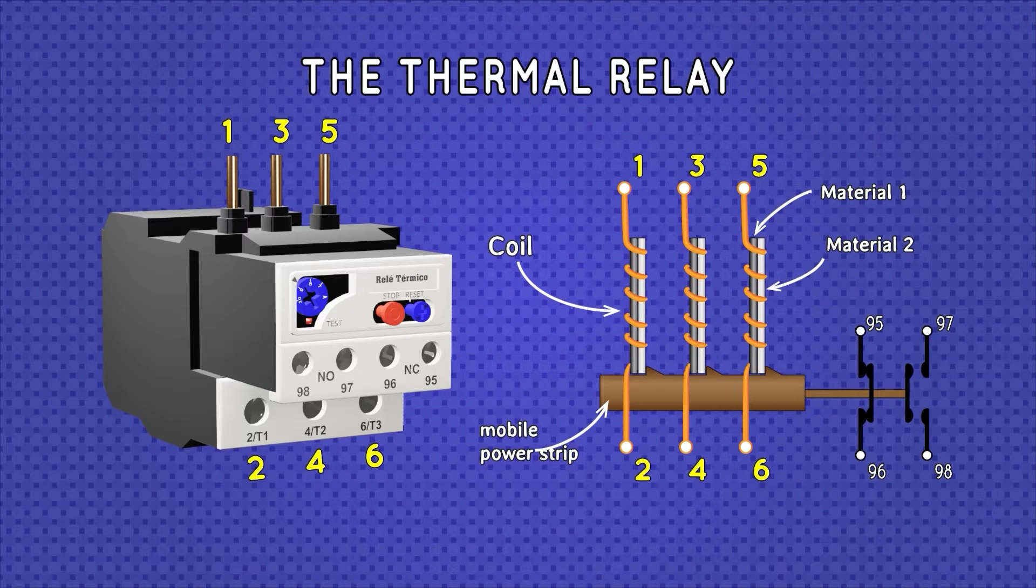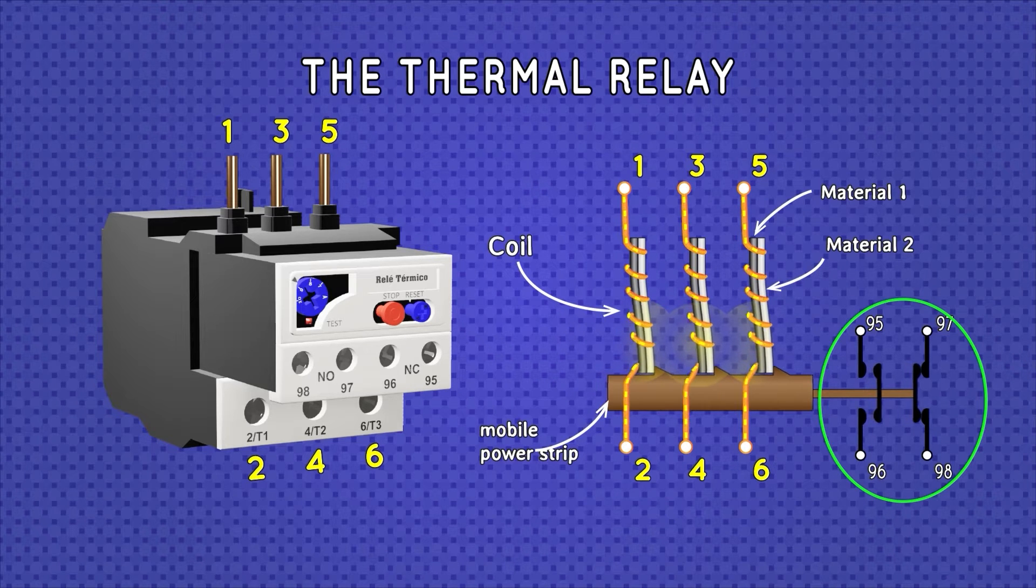Internally, a thermal relay consists of three main bimetals, each of which is constituted by the union of two types of metals with different types of thermal expansion coefficient. In addition, each bimetal has a wire winding which forms a small coil which, when current circulates, the bimetals deform and push the moving strip.